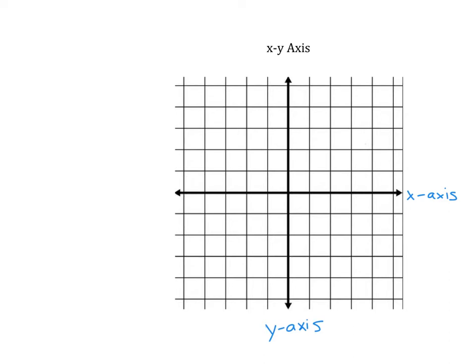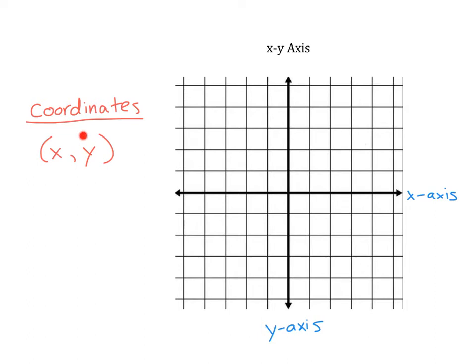Those values are going to come from what are called coordinates. A coordinate is just a way to describe where something is located on an XY axis. A coordinate should always have parentheses, there should always be two numbers — an x value and a y value — and there should always be a comma in between. Make sure you're writing your coordinates appropriately.